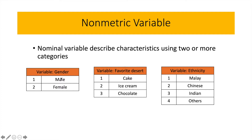For example, the variable gender has two categories — it describes male and female. For the variable favorite dessert, it has three categories: number one would be cake, number two will be ice cream, and number three will be chocolate.